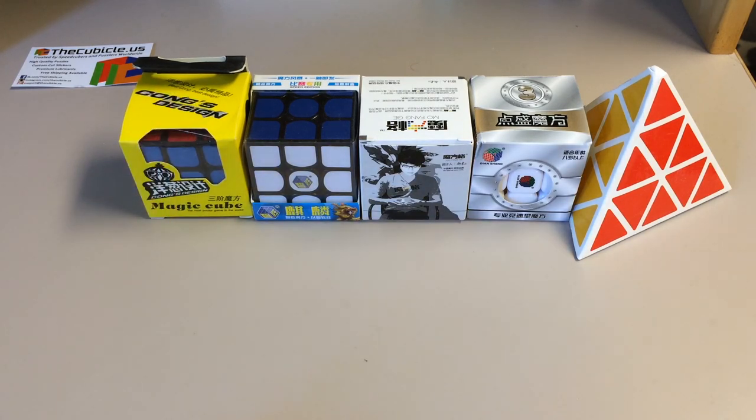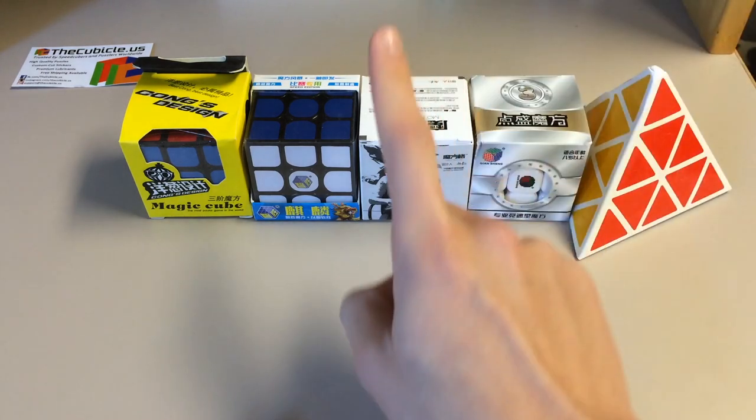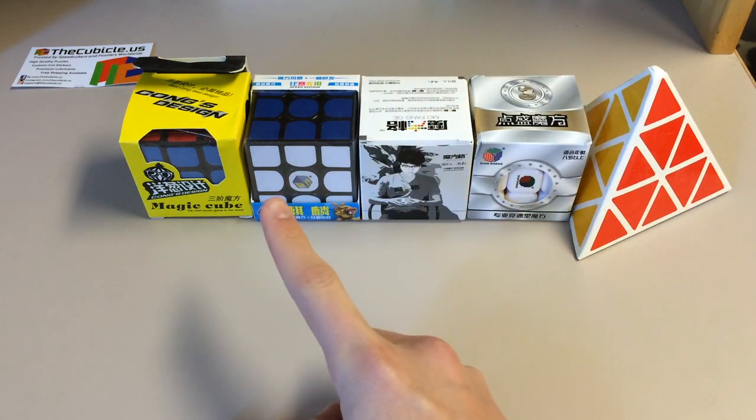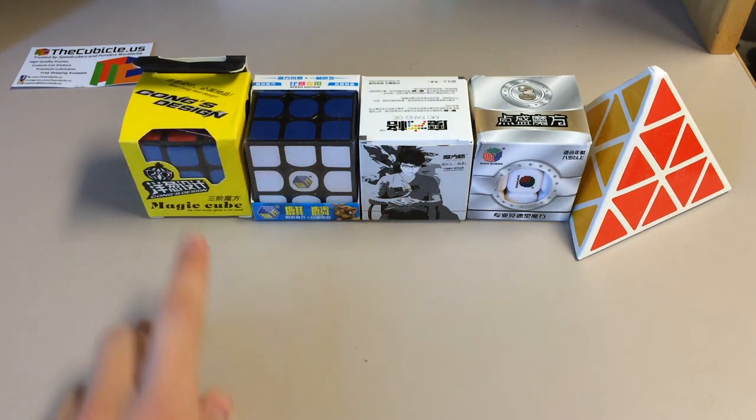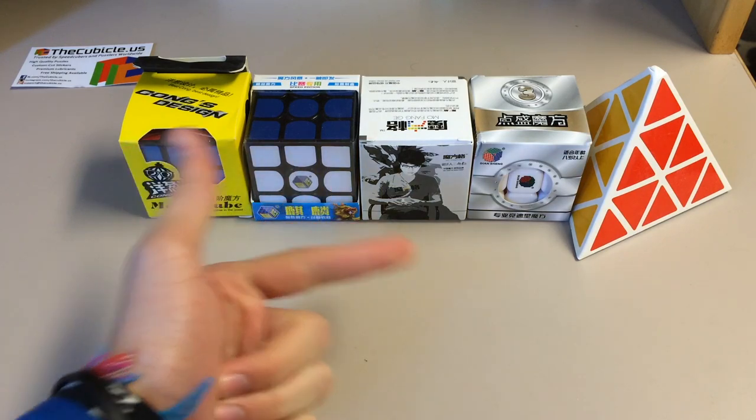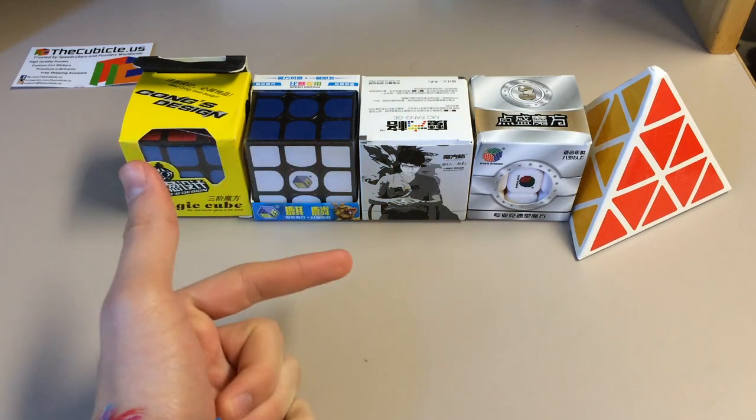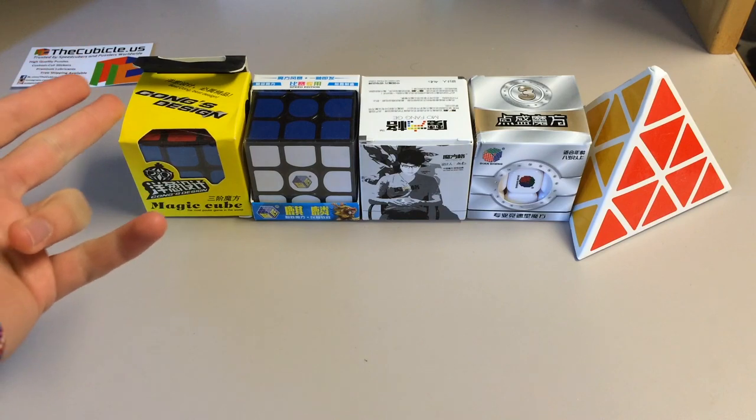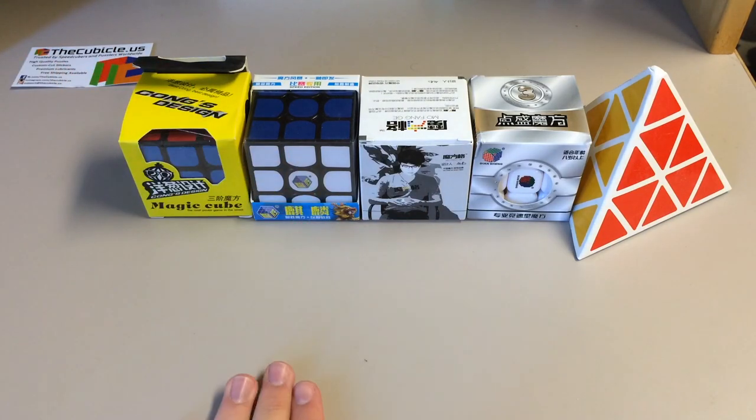So the Yu Yang is actually the first cube from Kong's design, which is a new branch off of Moyu. So if Moyu was right here on the top, it would branch down to Kong's design. Kong has helped with several other Moyu cubes, and this is the third in the Ying series, which is the Huan Ying, and then the Li Ying, which is also the Huan Ying V2. So I guess this can be considered a Li Ying V2 or a Huan Ying V3.